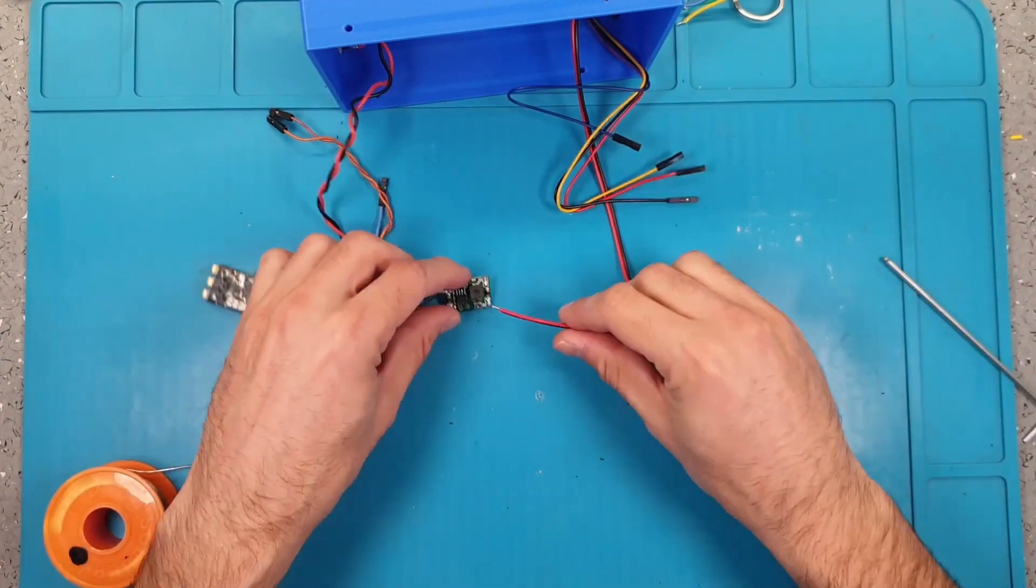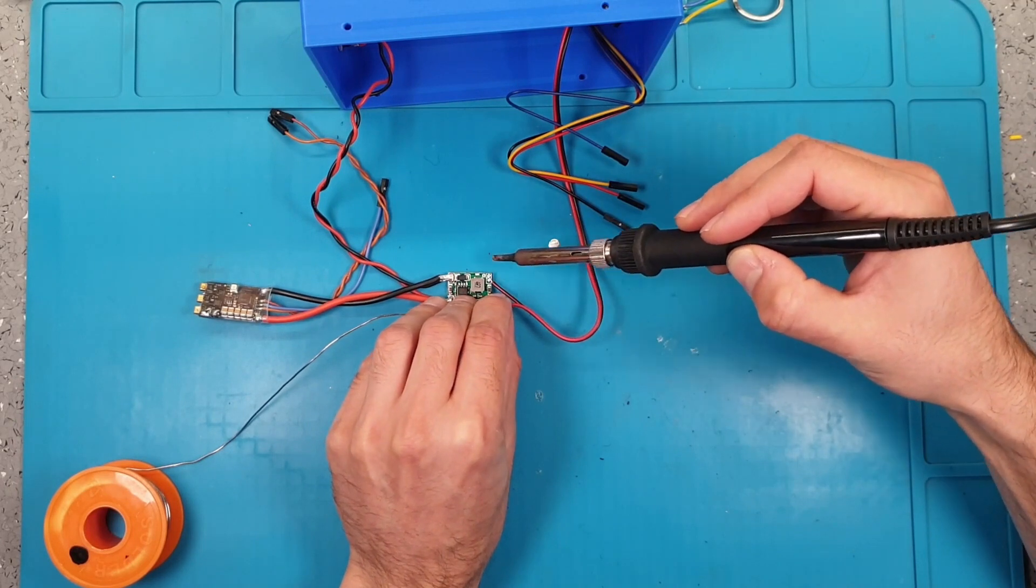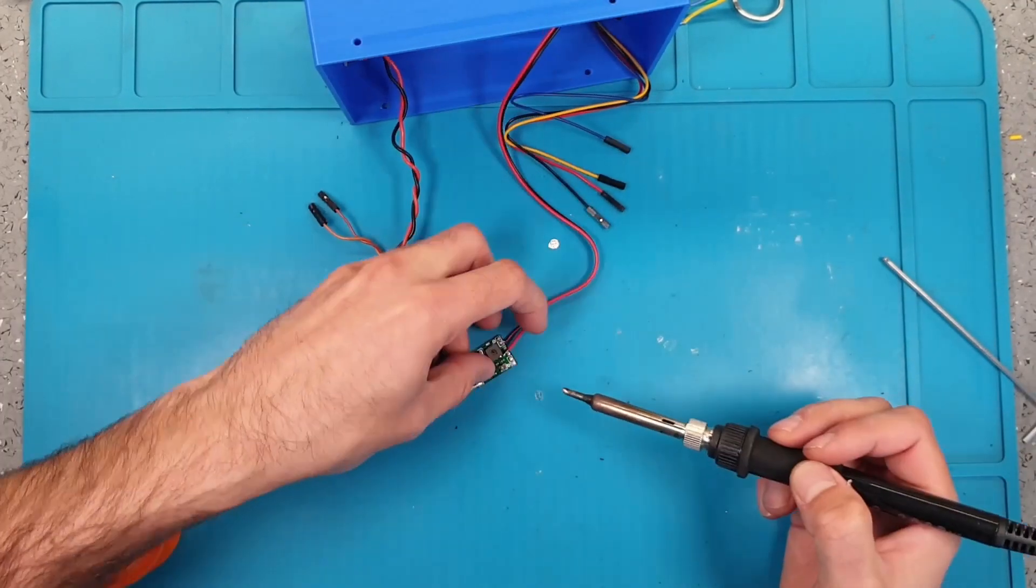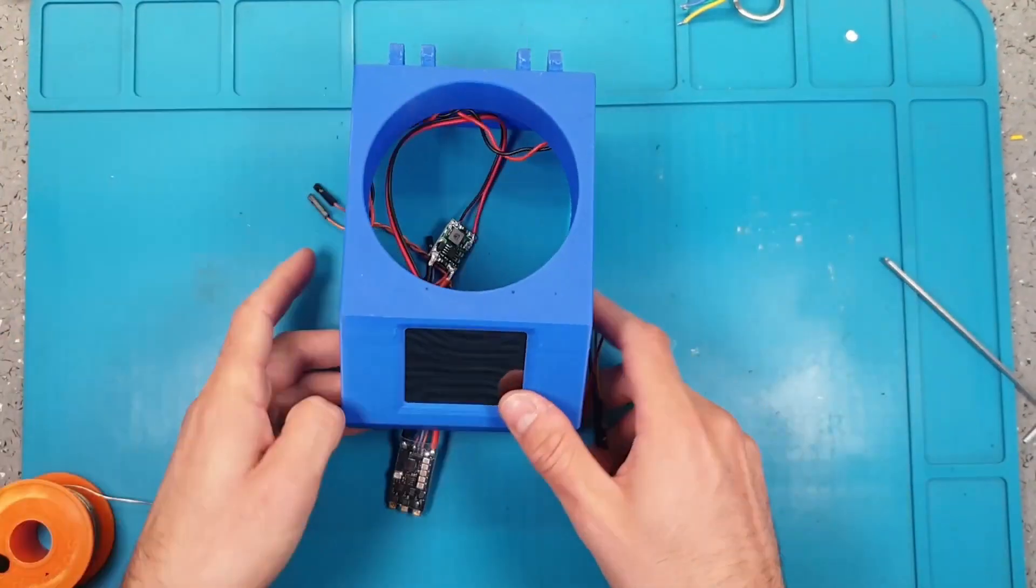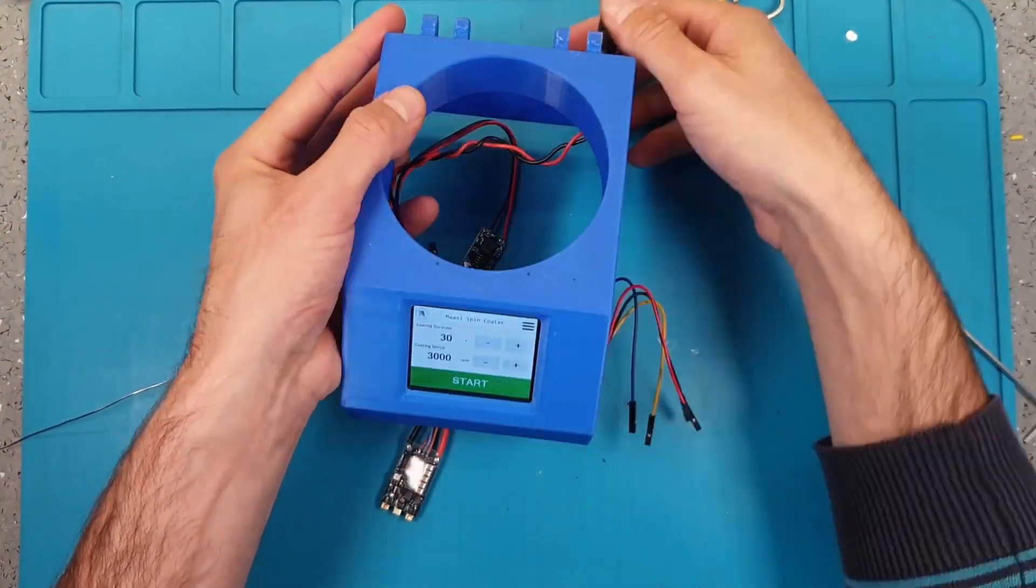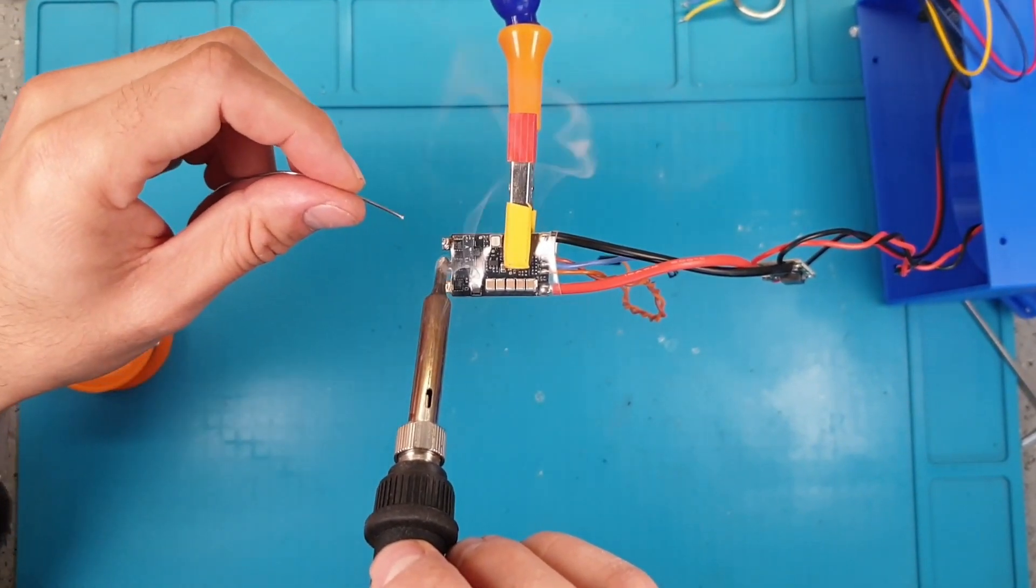After adding the connector we can secure the display in place using M3 bolts. Now we can solder the display to the DC-DC, the motor and the ESP32 in place.